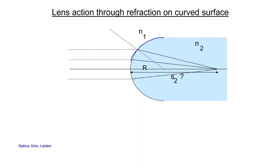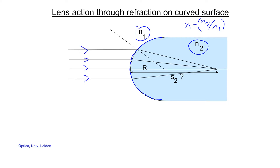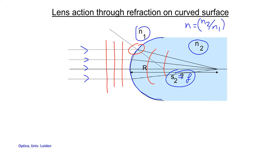We consider lens action through refraction on a curved surface between two media, typically glass and air. The refraction depends only on the ratio between the two indices. Let's consider first a parallel incident beam focused at distance S2, which equals the focal length. This focusing occurs because of refraction at the surface — flat wave fronts come in, curved wave fronts exit, and light is focused here. The challenge is to calculate this distance for this geometry.